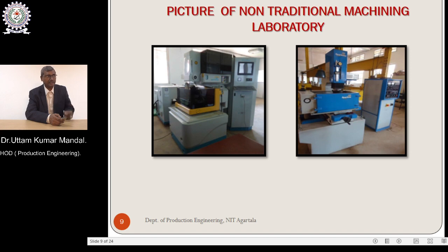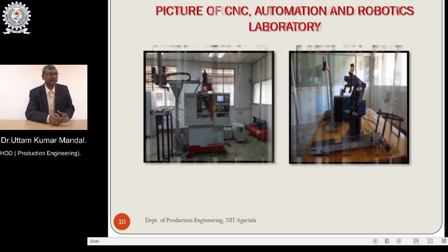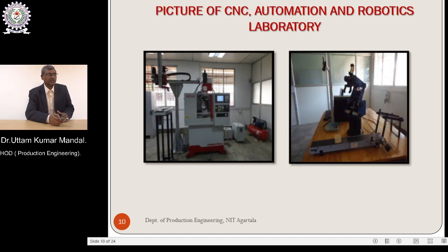Tolerance is very high for non-traditional machining. With the development of technology, nowadays we are using super CNC also, which is also under non-traditional or non-conventional machining. Different non-conventional machining tools are there like CNC lathe, CNC milling. Also in our department, a robotics lab is there — all of the automation part, fully automatic.